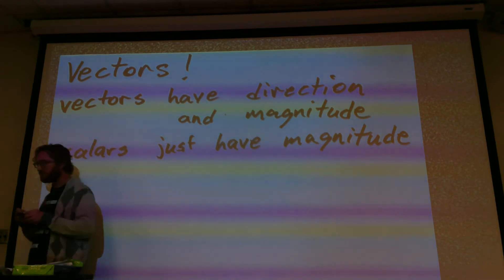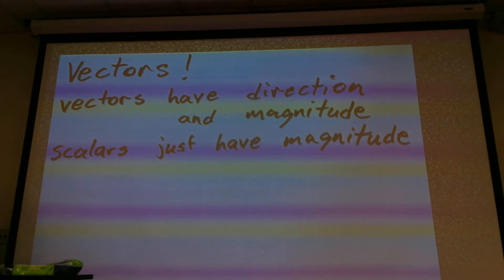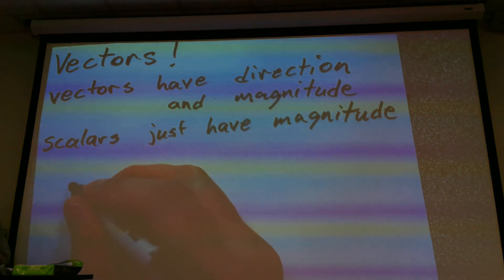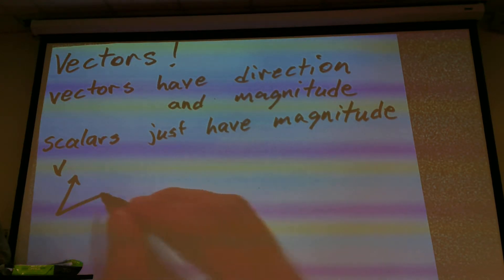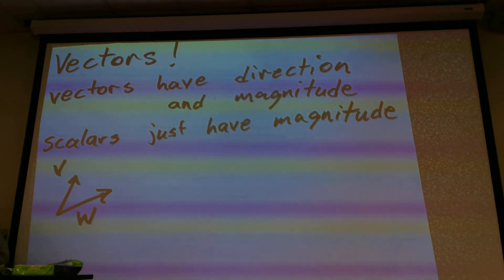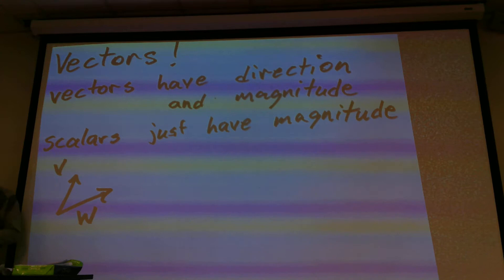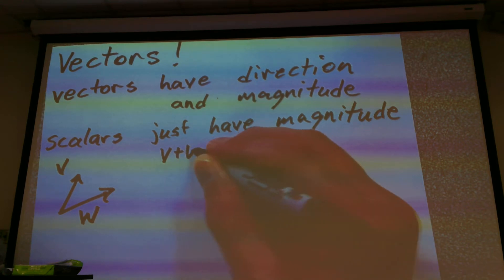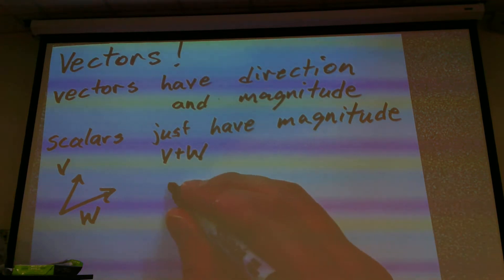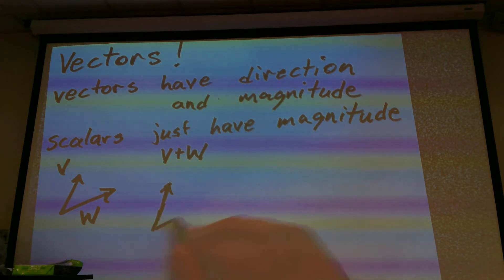Some people see this in different ways, but if you have a vector v and a vector w, and you wanted to add these two vectors together — v plus w — then all you're going to do is draw a parallelogram.